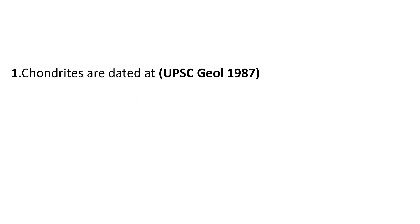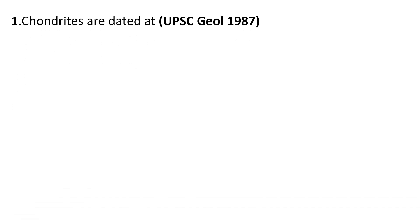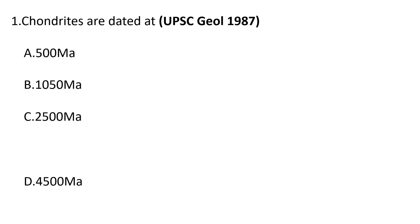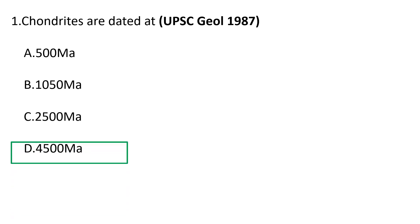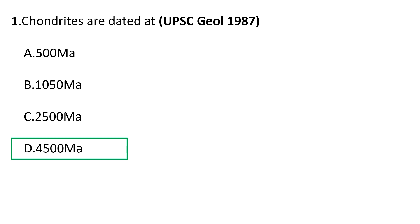First question: conduits are dated — this question was asked in the UPSC Geologist Exam 1987. Choices are: a) 500 million years, b) 1050 million years, c) 2500 million years, and d) 4500 million years. The correct answer is d) 4500 million years, approximately the age of the Earth, as conduits are part and parcel of Earth material.